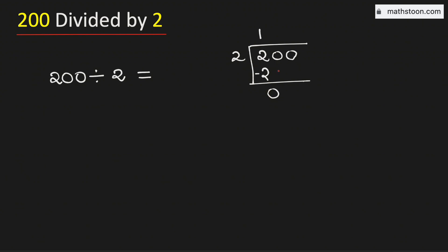As 0 is less than 2, we will bring down this number 0 here. Now see that this is the number 0. 2 times 0 is 0, subtract we get 0.